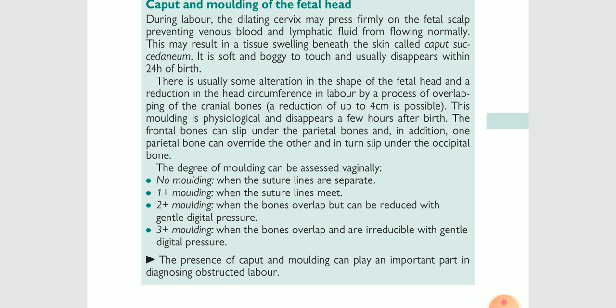Second degree molding is when the bones overlap but can be reduced with gentle digital pressure. If the bones overlap each other, it is second degree molding. However, if you put gentle pressure with your finger and try to separate the two bones and they easily separate, this confirms second degree molding.